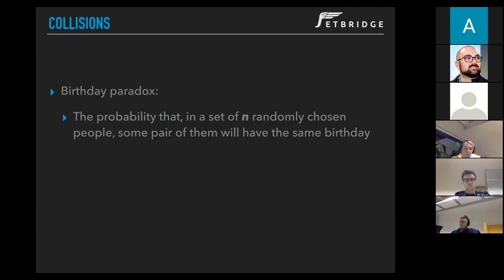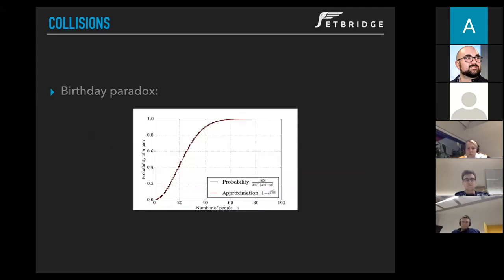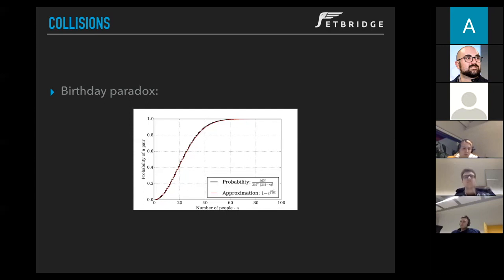It turns out that we only need a group of 40 to 50 people to be almost certain that we have a pair of people with the same birthday — thus we get a collision. Looking at this graph, when the number of people increases, the probability of collision significantly rises. We only need 20 people to have a 50% probability of getting a collision — not much, knowing that there are 365 days in a year.